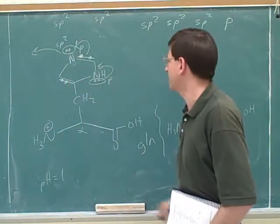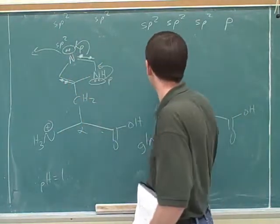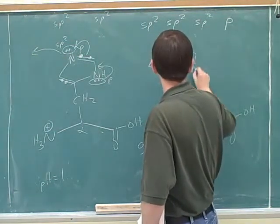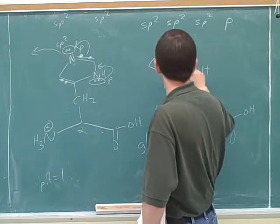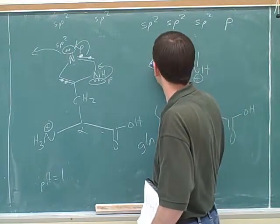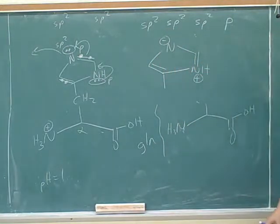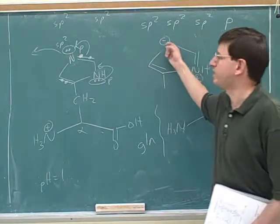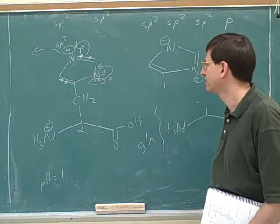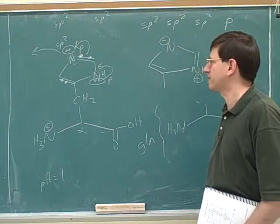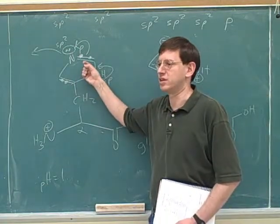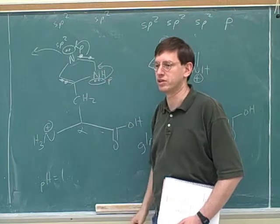There's another resonance structure that looks like this. We can move these electrons over here and those electrons over here, and then we get a resonance structure that clearly shows this is the basic nitrogen and this is not a basic nitrogen. When your instructor explains this in class, you would probably use the aromaticity explanation, but the resonance explanation is a good one too.